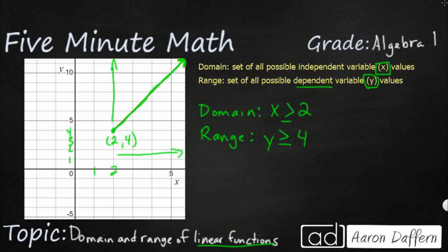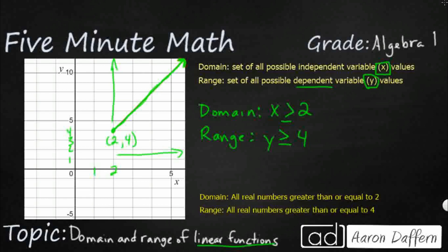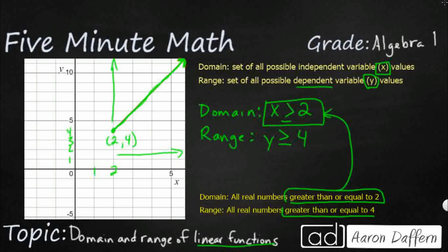We can also represent this with words. Sometimes instead of these inequalities, we'll need to just write them out. The domain is all real numbers greater than or equal to 2, and the range is all real numbers greater than or equal to 4.